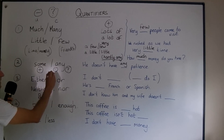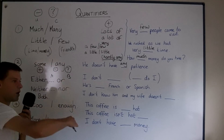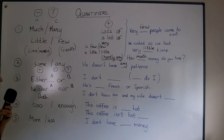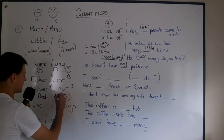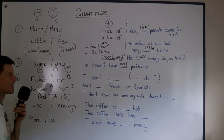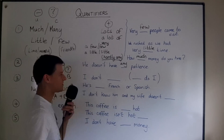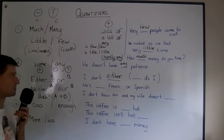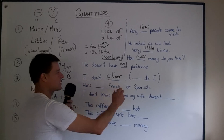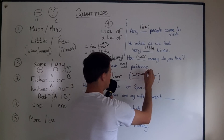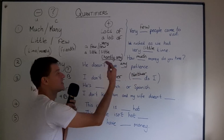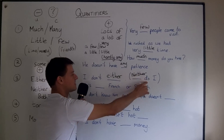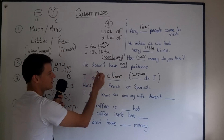Next: either/or, neither/nor, and both. 'Either A or B' means this one or this one. 'Neither A nor B' means not A and not B. 'Both' means A and B together. 'He doesn't have any patience. I don't either' means I also have no patience. You could also say 'neither do I' — an auxiliary verb reply. So 'I don't either' is the same as 'neither do I.'